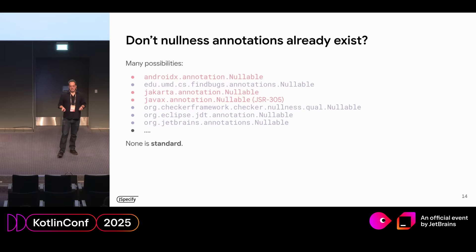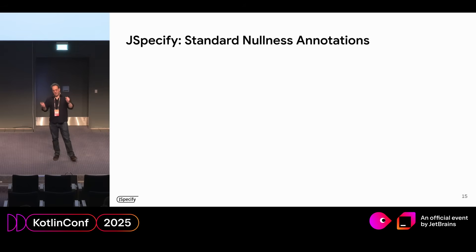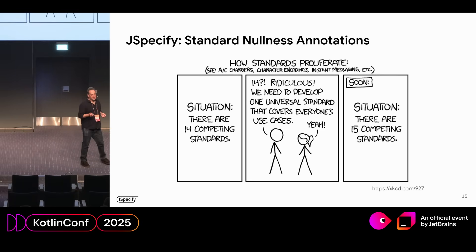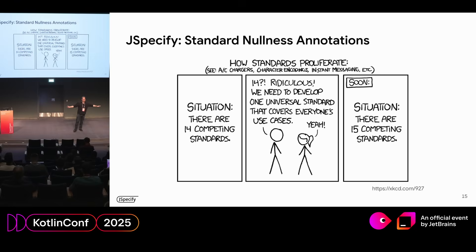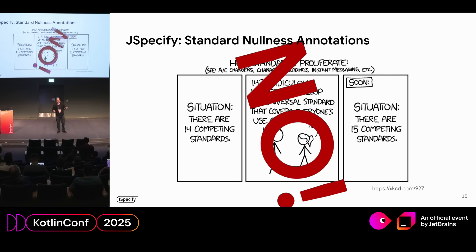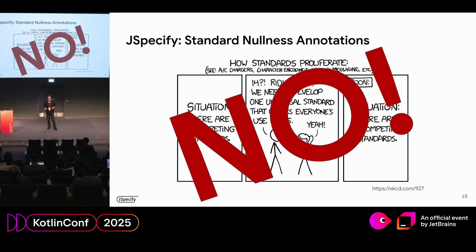Basically, none of these existing annotation packages is actually a standard. That's where JSpecify comes in — our annotations are actually a standard. Now, I know what you're thinking: you're thinking about that famous XKCD cartoon. There are 14 competing standards, let's have one to rule them all and deprecate the others, and now we have 15 competing standards. This is a good cartoon. It applies to things like AC chargers. It doesn't apply to our situation. The main reason is none of the existing annotations is a standard — they weren't even trying to be. There's one that attempted to be a standard: JSR 305. It never got released, everybody depends on it, and its status is dormant — do not use.